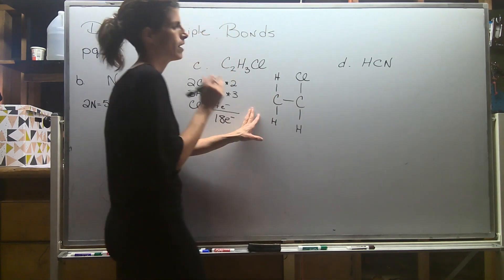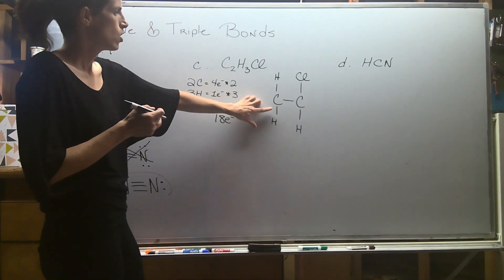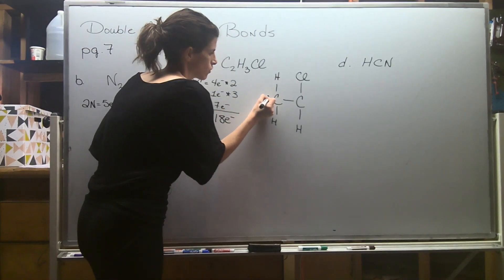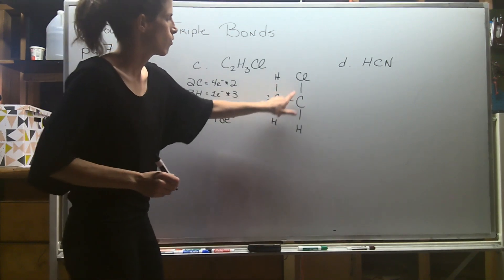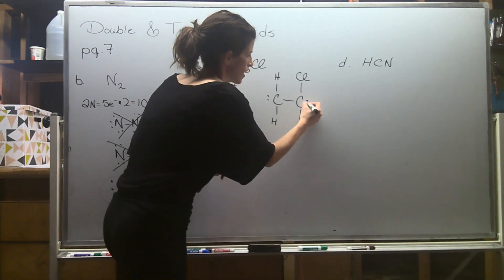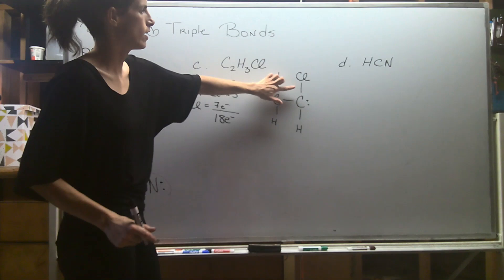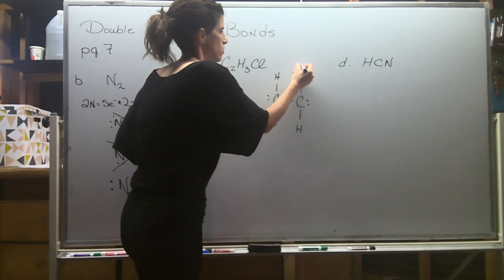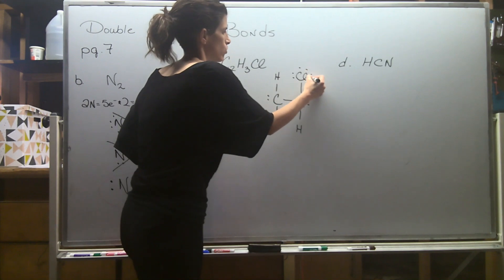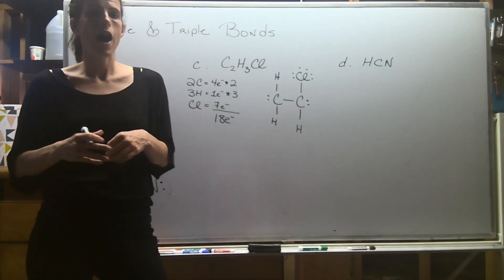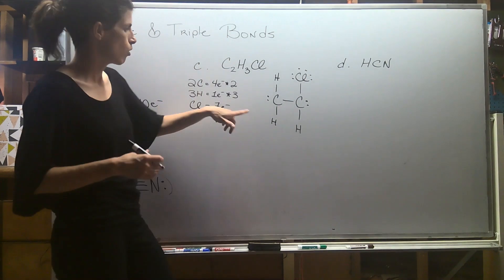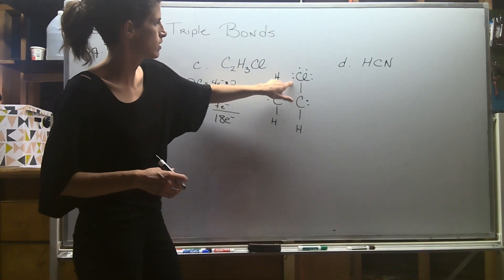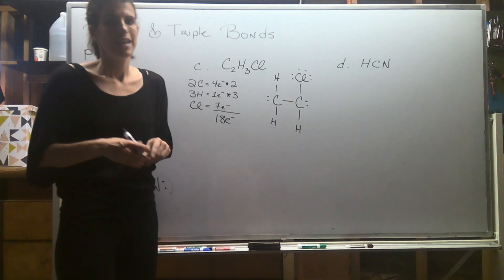I'm going to get all my octets satisfied. Currently one carbon has two, four, six, so I add two more electrons to get to eight. Hydrogens are good. The chlorine is going to need six more electrons — three lone pairs. Once all octets are satisfied, I do a total count: two, four, six, eight, ten, twelve, fourteen, sixteen, eighteen, twenty. That's not going to work — we only have 18 electrons.